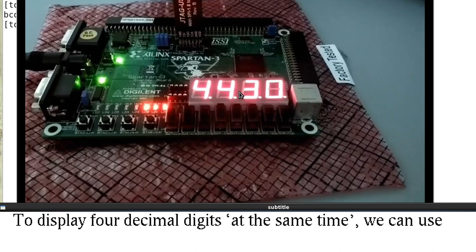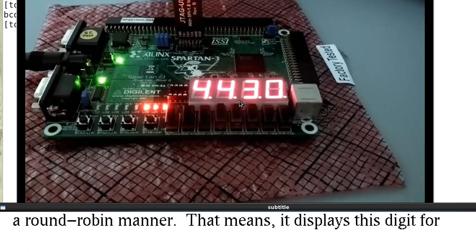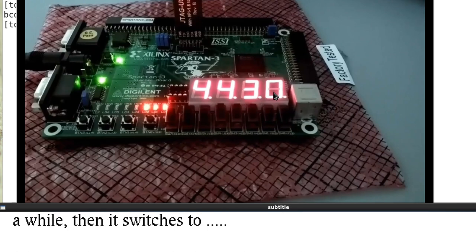To display all four decimal digits at the same time, we can use the time multiplexing technique, which displays the digits in a round-robin manner. That means it displays this digit for a while and then it switches to this one and then this one and then this one and then it goes back to the first one. If the switching is fast, then it appears that all digits are displayed at the same time.